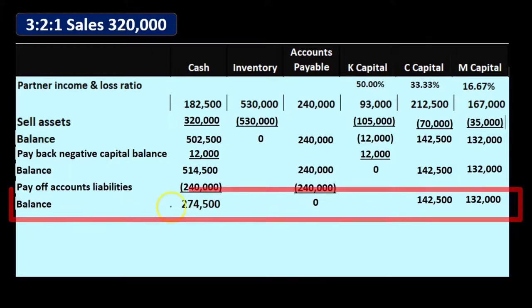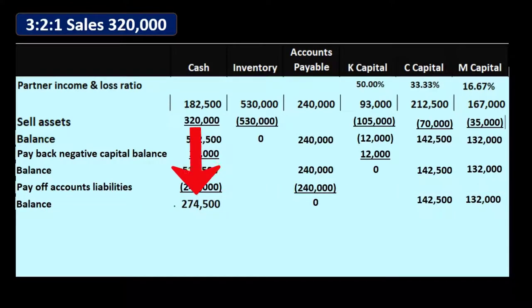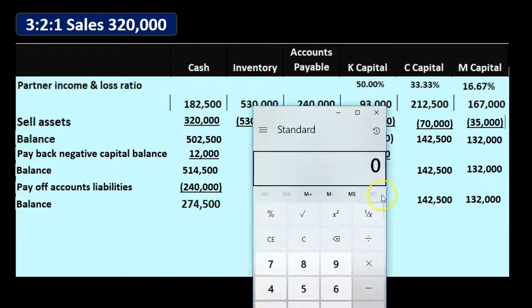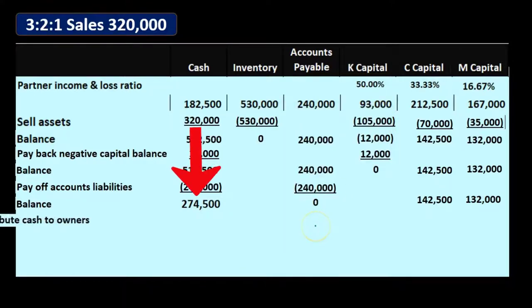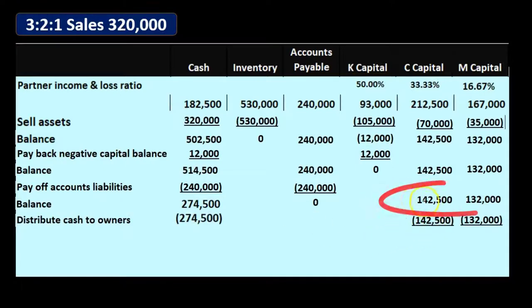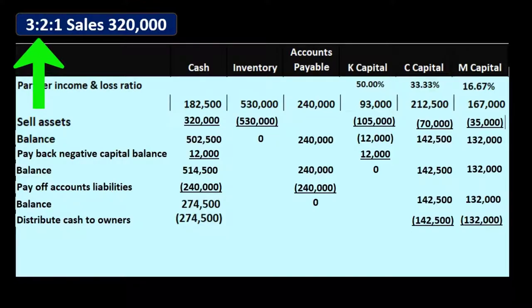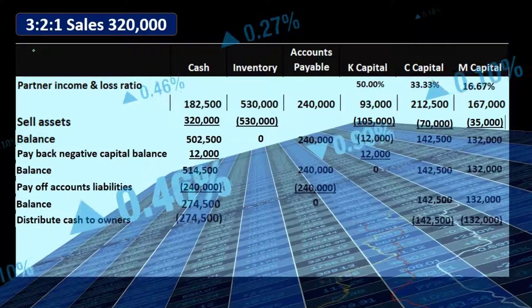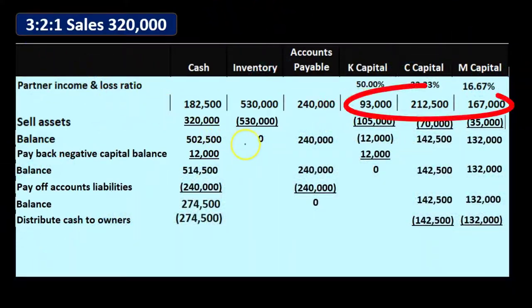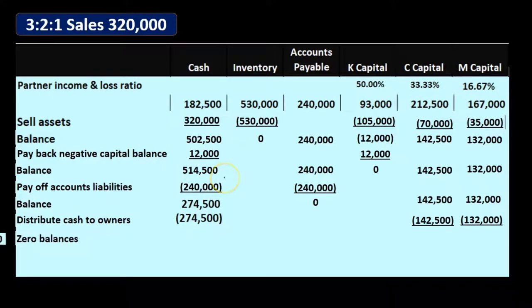Now we can finally pay out the partners and be done with the partnership. The $274,500 cash is equivalent to C's $142,500 plus M's $132,000. The accounting equation has stayed in balance throughout. Note that these capital account balances are not in the same 3-2-1 ratio as profit sharing — and they don't have to be, because capital accounts are also affected by draws and investments, not just profit sharing percentages.